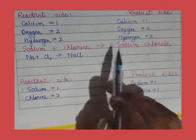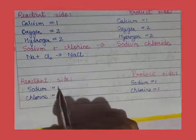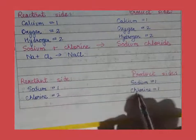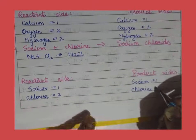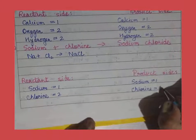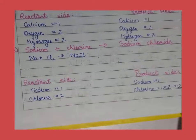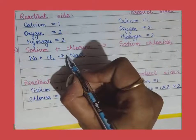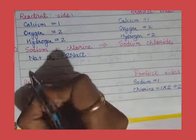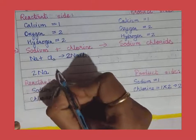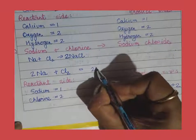Sodium reacts with chlorine to give sodium chloride. On the reactant side, sodium is 1 and chlorine is 2. On the product side, sodium is 1 and chlorine is 1. Sodium is balanced, but chlorine is not. In order to make chlorine equal, we multiply NaCl by 2, making chlorine 2. But then sodium also becomes 2, so we multiply sodium by 2 on the reactant side as well. Hence we can write the sign of equality.